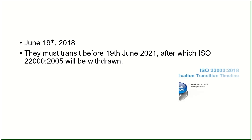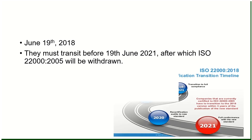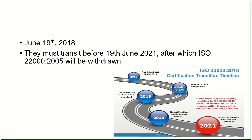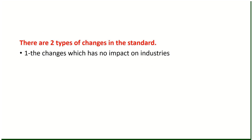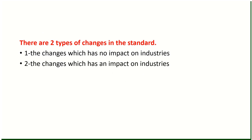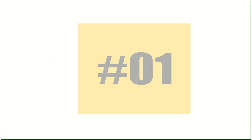In the new version of ISO 22000:2018, there are two types of changes: number one, changes which have no impact on industries, and number two, changes which have an impact on industries. We will see both changes in detail, and at the end of each change I will tell you the impact on industries who want to transit from the 2005 version to 2018.